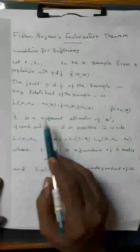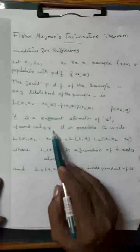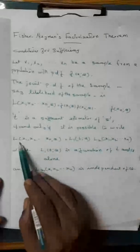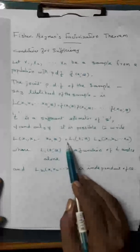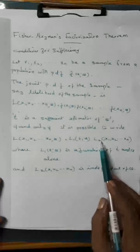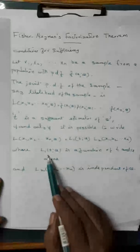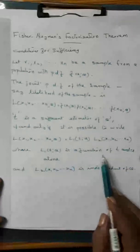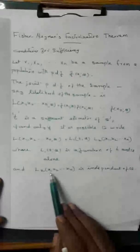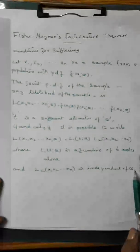T is a sufficient estimator of θ if and only if it is possible to write L(x1,x2,...,xn;θ) equals L1(t;θ) times L2(x1,x2,...,xn), where L1(t;θ) is a function of t and θ alone, and L2(x1,x2,...,xn) is independent of θ.